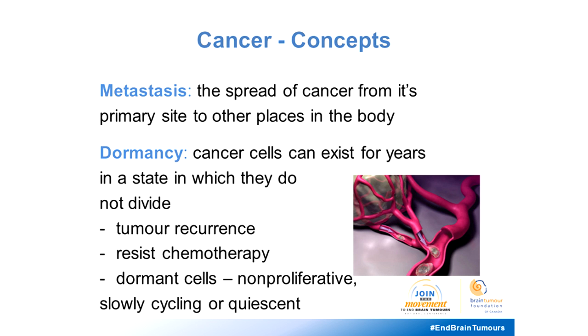The first is metastasis, which I'm sure most of you already know about — this is the spread of cancer from its primary site to other places in the body. The second concept is dormancy, which may be new to some of you. This is a concept where cancer cells can exist for many years in a state in which they don't divide. These are the cancer cells believed to be responsible for tumor recurrence. They resist chemotherapy, and they're also referred to as non-proliferative, quiescent, or slowly cycling.